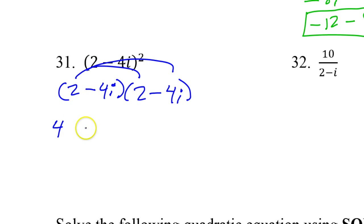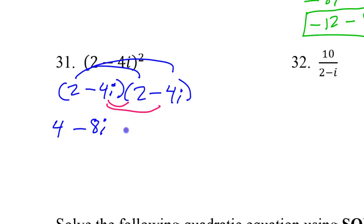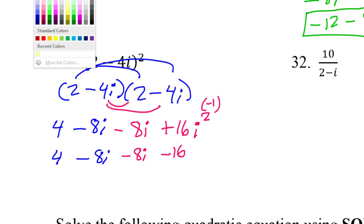So that's going to be 4 minus 8i. And then that's going to be another minus 8i. Positive 16i squared. That i squared is a negative 1. So that's going to change this to a negative 16 without the i.